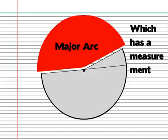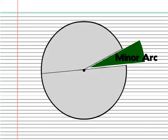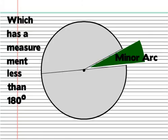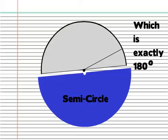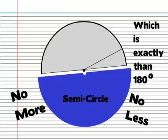Major arc, which has a measurement greater than 180. Minor arc, which has a measurement less than 180. And semicircle, which is exactly 180. No more, no less. So don't argue that it can be a major arc. That would make you sound stupid.